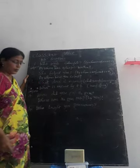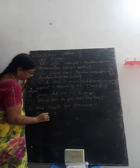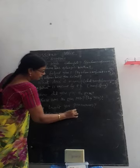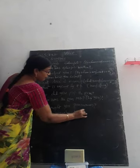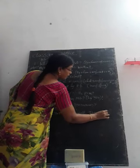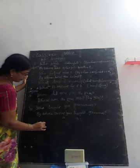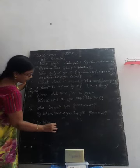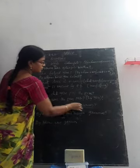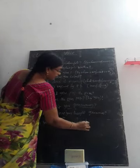Example 5: Who taught you grammar? By whom? The question begins with WHO so we use BY WHOM. WERE YOU TAUGHT GRAMMAR? BY WHOM WERE YOU TAUGHT GRAMMAR? Or otherwise: BY WHOM WAS GRAMMAR TAUGHT? Since there are two objects, we can write in two ways.